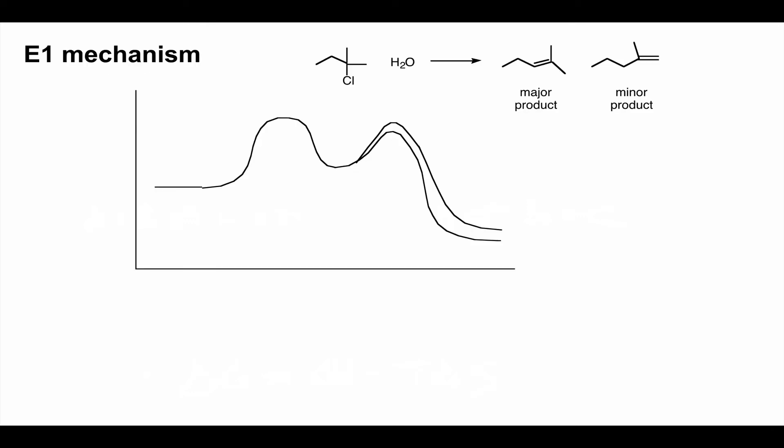The E1 mechanism is a multi-step mechanism, just like SN1. The rate-determining step is forming the intermediate carbocation — that's the whole key for an E1 reaction. These are favored at higher temperatures, and just like SN1, you still need a good leaving group. Here we have a tertiary alkyl chloride; we do an elimination in water and get two products — a major and a minor.